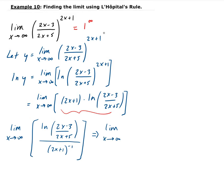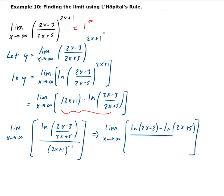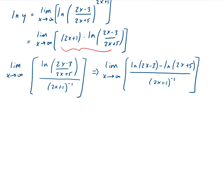So this is going to be the limit as x goes to infinity of the natural log of (2x minus 3) minus the natural log of (2x plus 5). It's a lot easier to work with this form than with the natural log of the quotient. Now we apply L'Hôpital's rule — take the derivative of the top and the bottom.